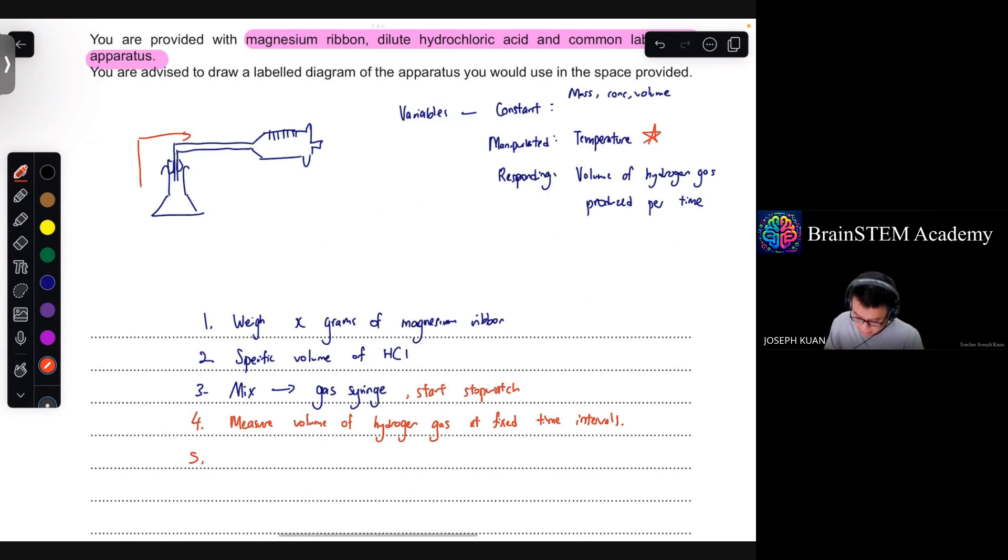So essentially you need to repeat the above steps at different temperatures. In different temperatures, I would say the easier method to manipulate temperature, maybe you should think of heating up or cooling down the hydrochloric acid. So that it's easier to be carried out if you were to do this similar experiment in paper five.